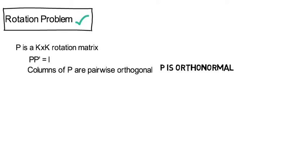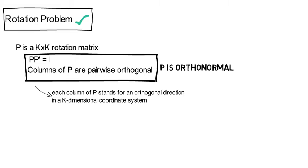All columns of P are pairwise orthogonal. Hence each column of P stands for an orthogonal direction in a K-dimensional coordinate system. I mentioned already here that an eigenvector matrix is also orthonormal, because each column of an eigenvector matrix represents a coordinate of a 90-degree system.